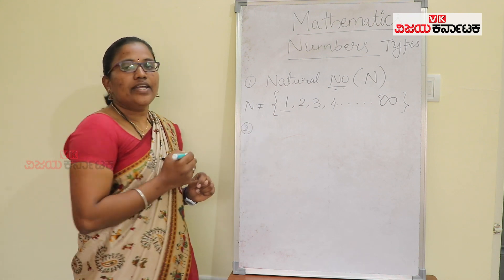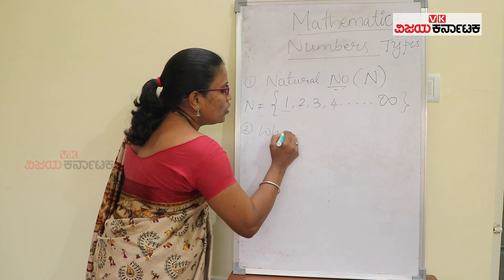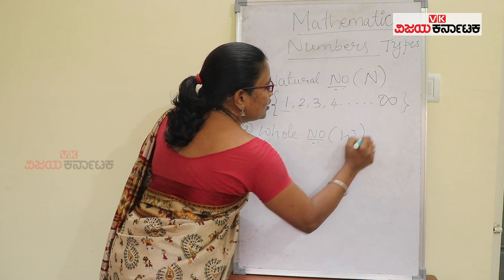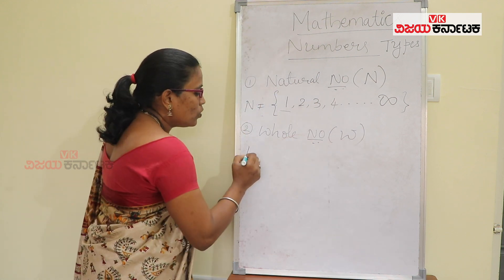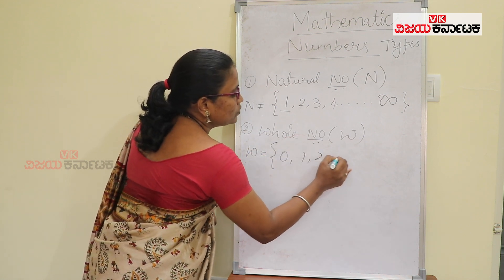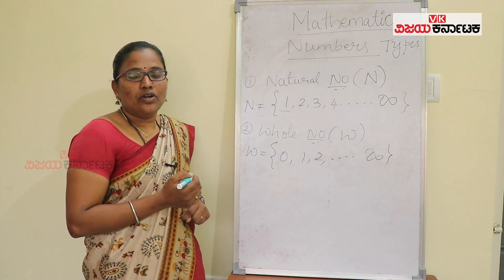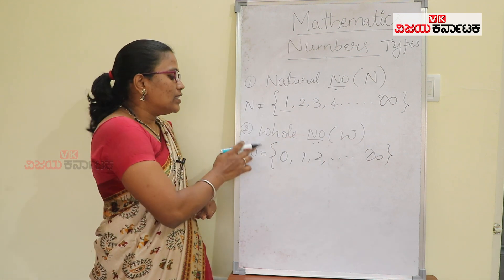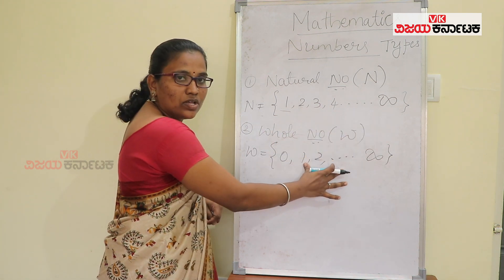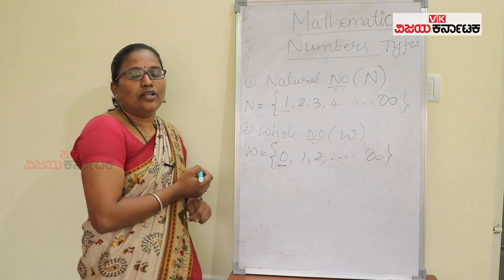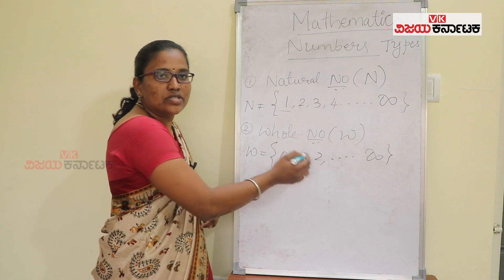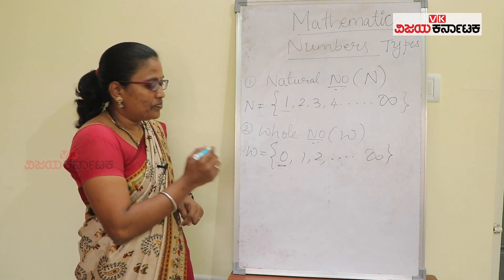Next is the whole number, which is represented by the letter W. This whole number starts from 0, 1, 2, 3, and so on up to infinity. What you can observe here is that in this whole number set, we have natural numbers also. Along with that, 0 has been included. So a set containing numbers starting from 0 is known as a whole number.